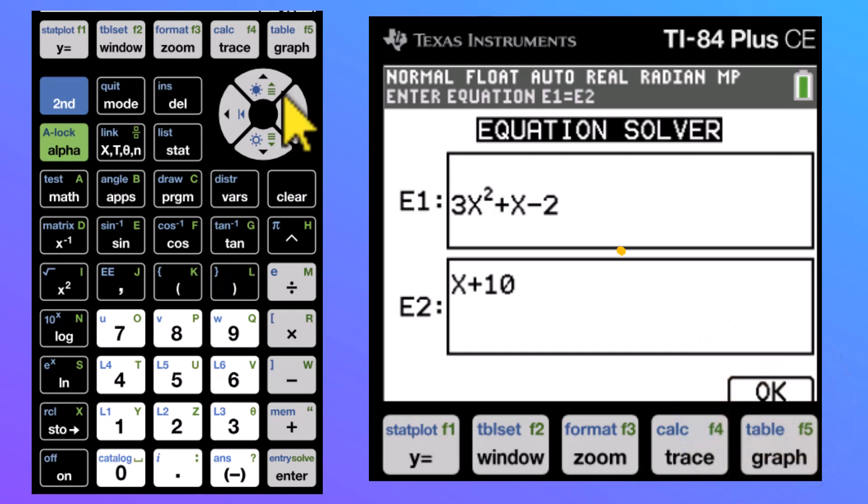And I'm ready for the second side which was x + 10. So x + 10. Notice that that OK popped up in the lower right-hand corner. I'm going to click that by just clicking on the button below OK.